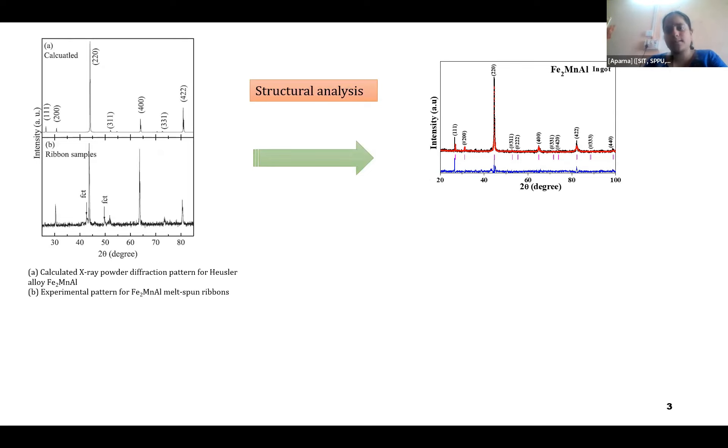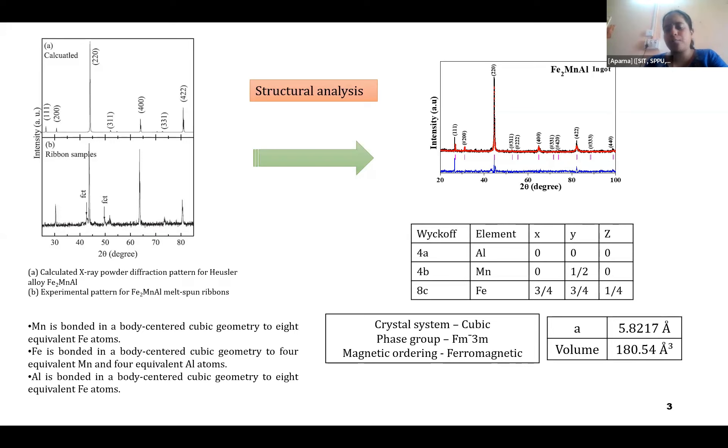Rather than it existing as an L2-1 structure, mainly because Mn and Fe, manganese and iron, are known to be transition metals. Because of their nearby atomic molecular weight, there is a chance of them to occupy each other's positions. Since the Wyckoff position of manganese and Fe, they can replace each other, and they try to exist on each other's atomic position.